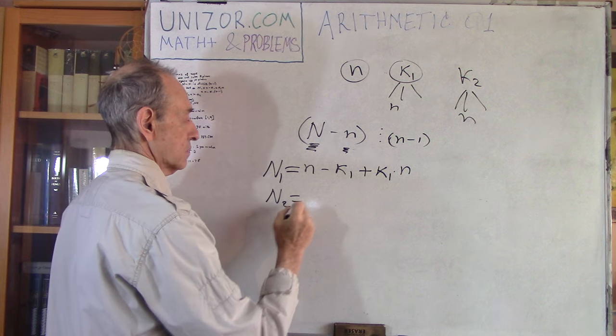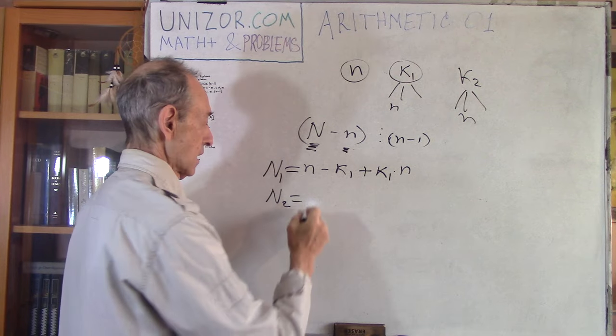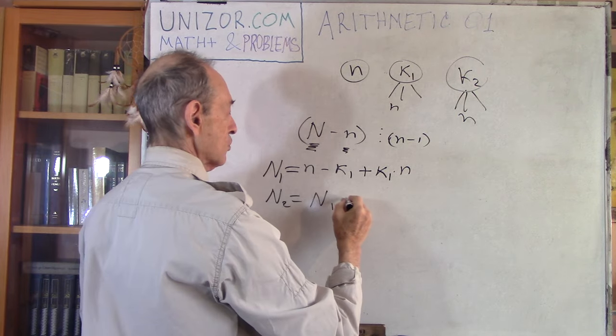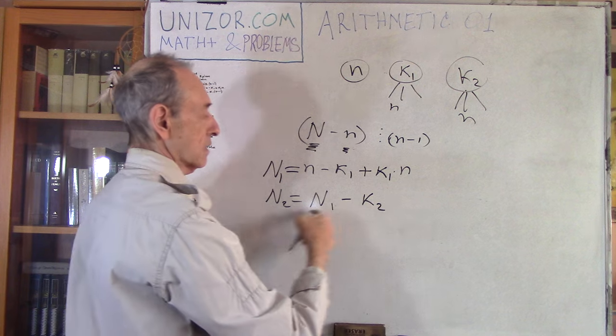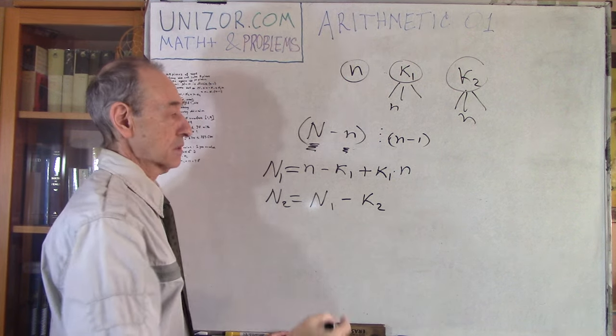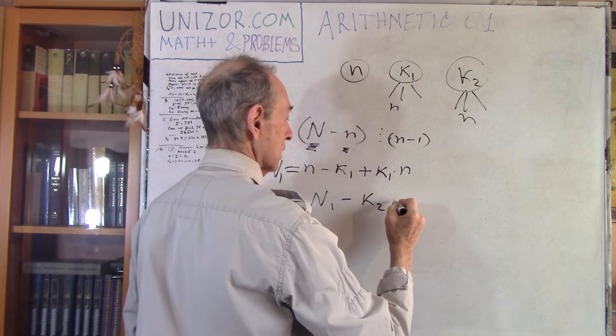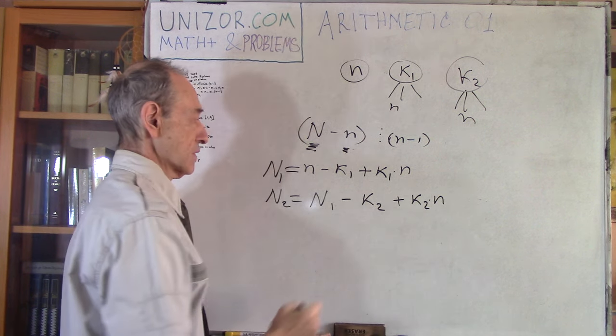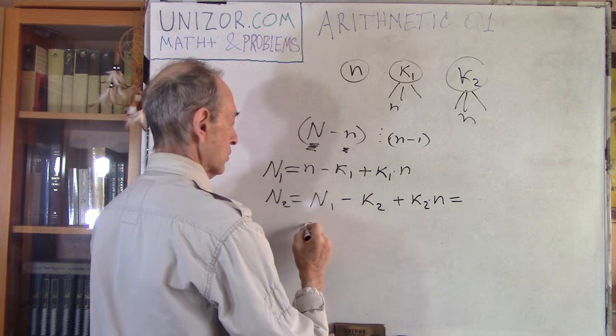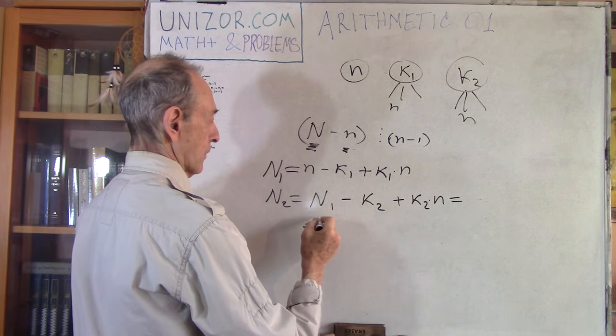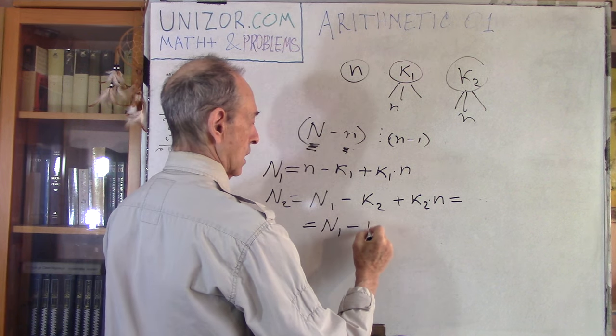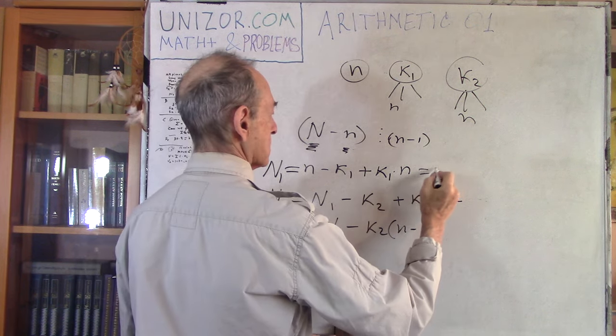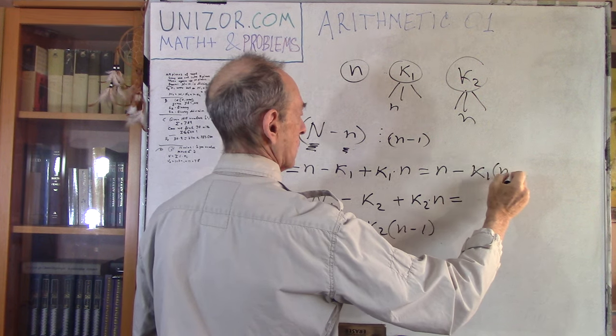N2, next step. What did I do? I took whatever the number of pieces I have, which is N1, took K2 of them, which means I left N1 minus K2 uncut, but I added, since I divided each one of those K2 into N pieces, I added this one. That's total number of pieces, which is equal to N minus K1 times N minus 1.